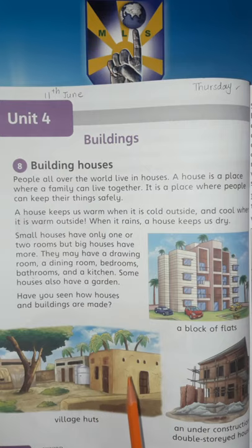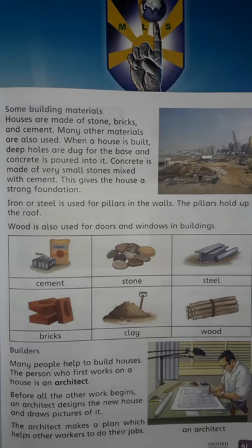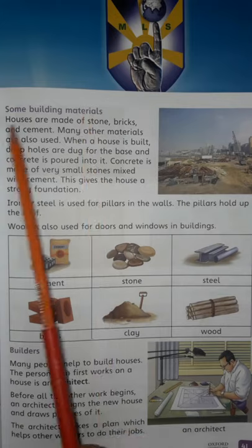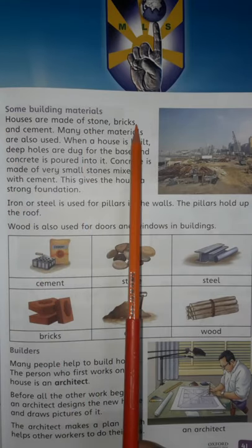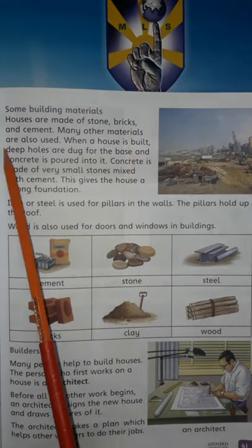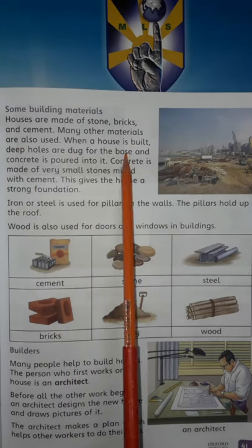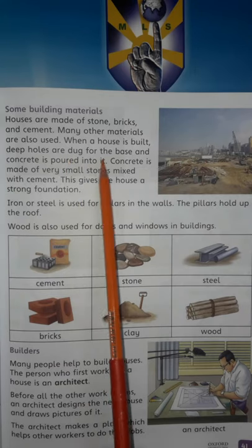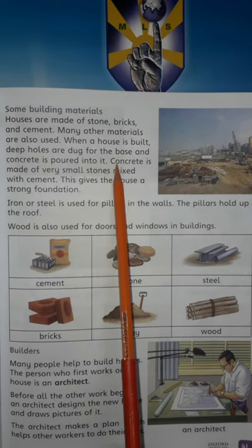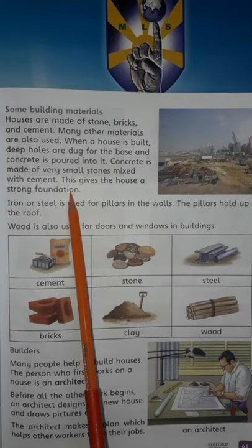Houses protect us from the cold and warm weather, help us keep dry, and protect us from outside weather. They also keep us safe. Some building materials: houses are made of stone, brick, and cement. When a house is built, deep holes are dug for the base and concrete is poured into it. Concrete is a mixture of very small stones mixed with cement, and this gives the house a strong foundation.